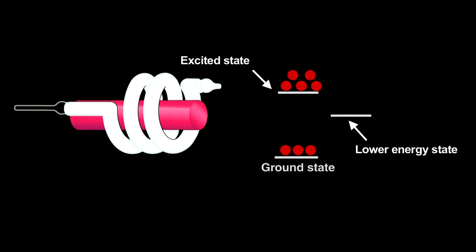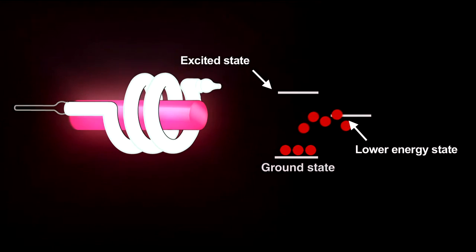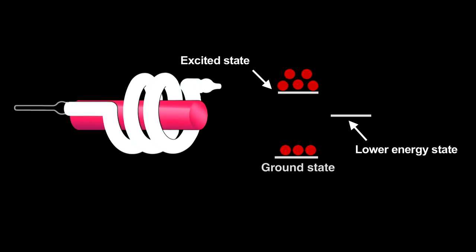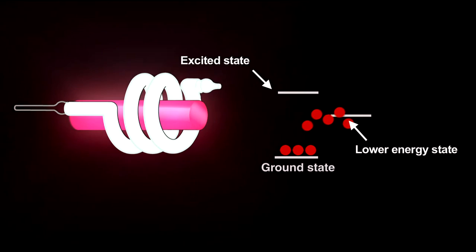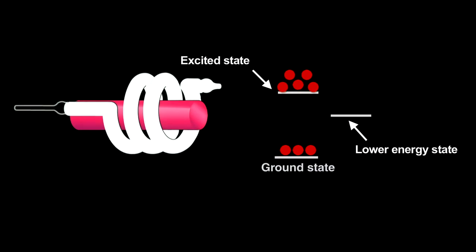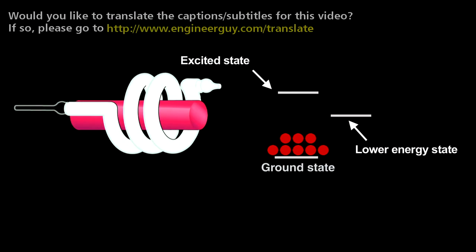Electrons from a population inversion returning to the ground state release light that starts an avalanche called stimulated emission. The photon produced when an electron decays induces other excited electrons to simultaneously decay and release nearly identical photons. That creates coherent light, meaning that the crests and troughs of every light wave in the beam match up.